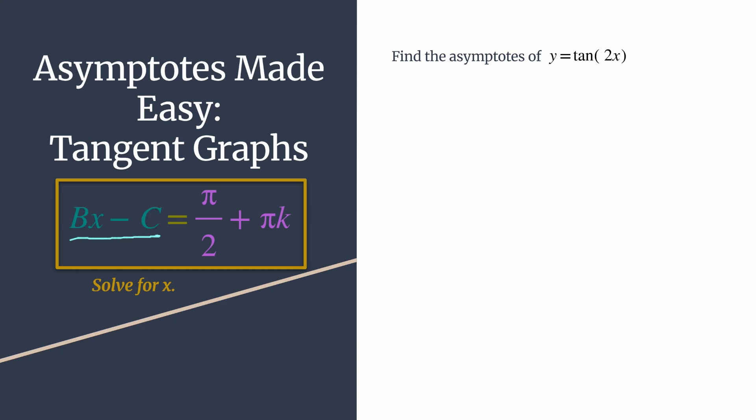I represent the horizontal transformations with this bx - c that's from the general equation for tangent, but a great way to think of that is it's whatever is inside the parentheses of tangent. You're taking the inputs of the tangent function and setting them equal to those asymptotes, so you're basically applying those horizontal transformations to the original vertical asymptotes to get the ones that you want. So really straightforward, let me show you how it works.